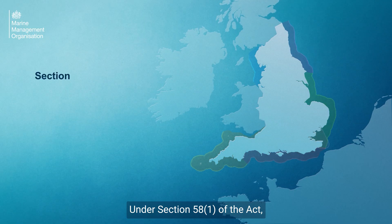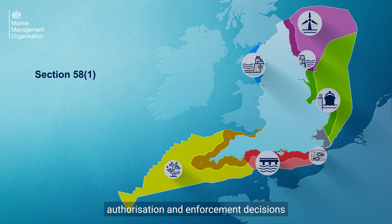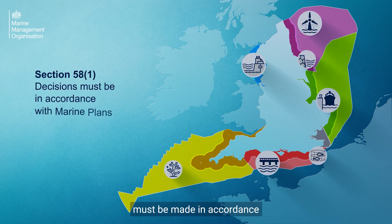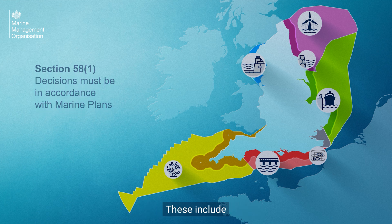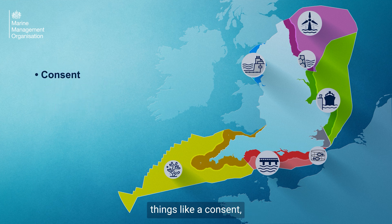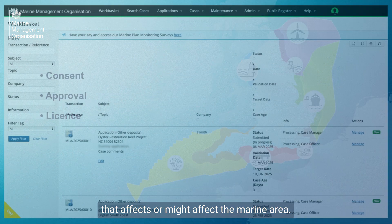Under Section 58 of the Act, authorisation and enforcement decisions must be made in accordance with marine plans. These include things like a consent, approval or licence that affects or might affect the marine area.